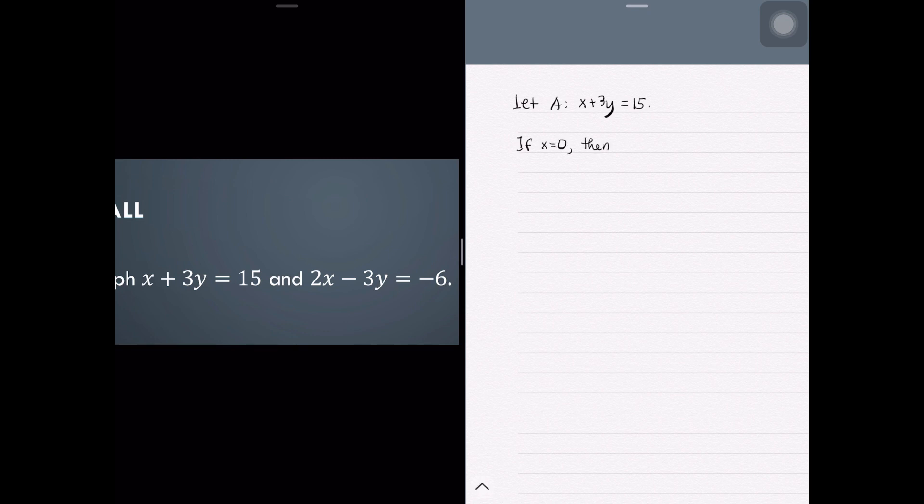As discussed in that video, we will just have to make x equals zero, then we have to solve for y. After that, we will make y equals zero and solve for x. If you are still having hard time with operations of integers, just click the eye icon at the upper right corner of your screen so that you will be redirected to that suggested video.